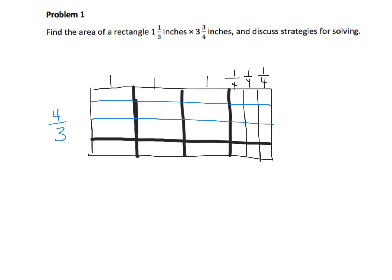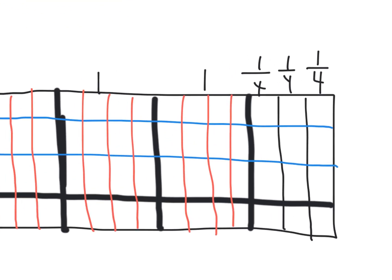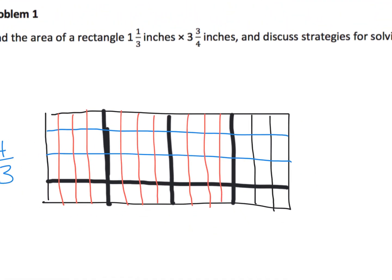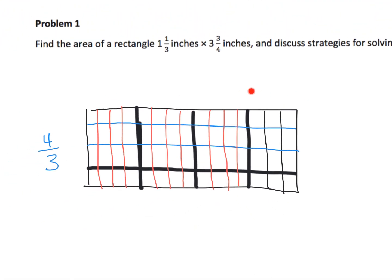In the same way, across the top everything has been cut into fourths, so I can cut each whole number into fourths: one, two, three, four — and repeat for each whole. Now we can remove the original labels and zoom back out. Across the top, instead of three and three fourths, we can count in fourths.